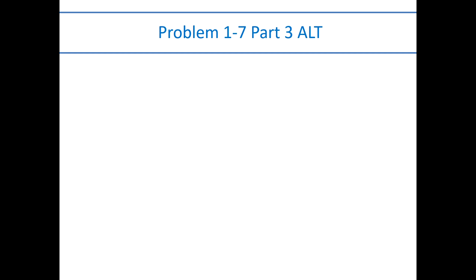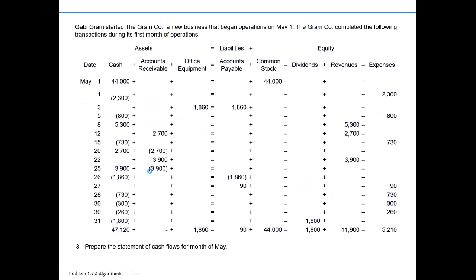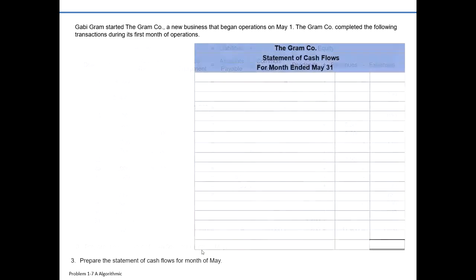This is our third and final video covering the alternate version of problem 1-7 focused on our statement of cash flow. We have previously analyzed Graham Company's main transactions to understand the impact of the accounting equation. We also prepared the first three of four financial statements: the income statement, statement of retained earnings, and balance sheet. And now we're on our fourth and final financial statement, the statement of cash flow.